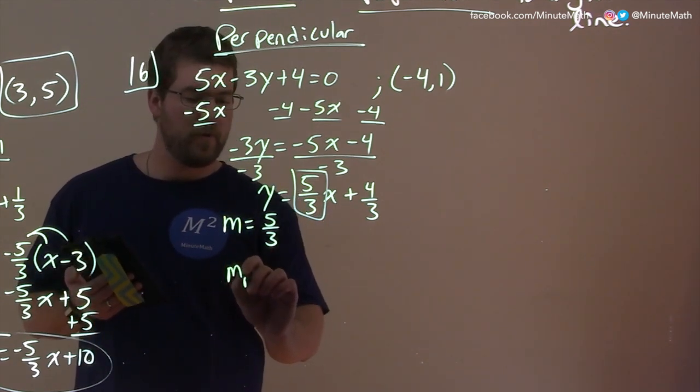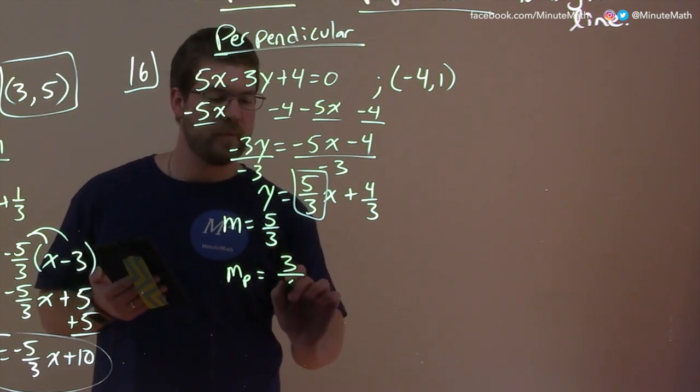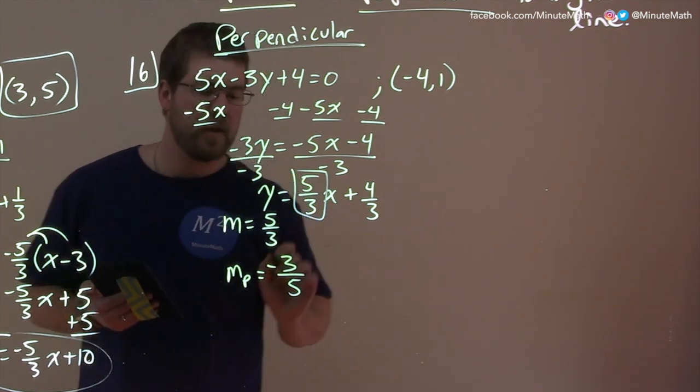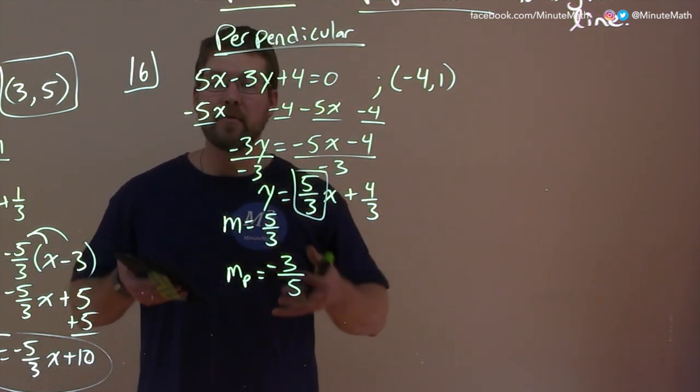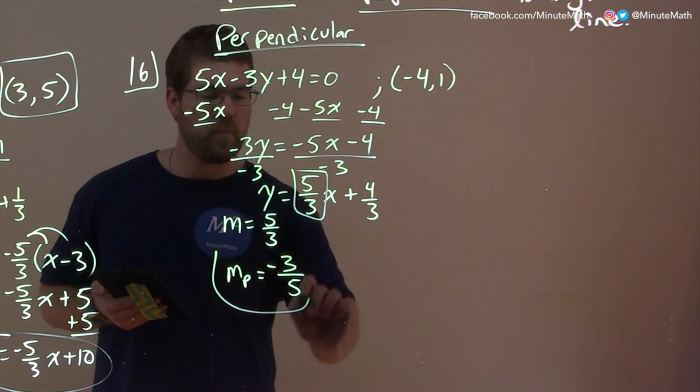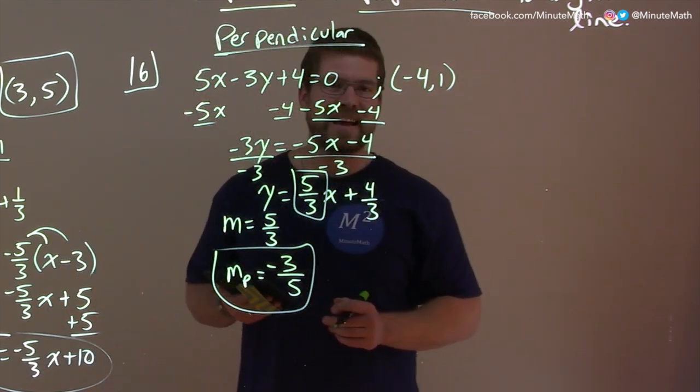So our slope of the perpendicular line, or perpendicular slope, we're going to flip it. 5 thirds is 3 fifths, and we put a minus sign on there. So an opposite sign, and we flip it. We call it the opposite reciprocal. So the slope we need now is negative 3 fifths here, and we're going to the point negative 4, 1.